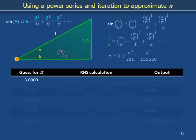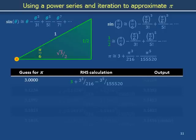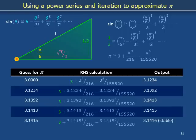We will approximate pi through iteration. We know that pi is somewhere around 3. We can put this value into the right-hand side of the equation to get 3 plus 3 cubed over 216 minus 3 to the 5th over 155,520. Using a calculator or long-hand arithmetic, we get 3.1234. Then 3.1234 can be substituted into the right-hand side to obtain 3.1392. Continuing three more times, the successive approximations to pi start settling down until they reach the stable value 3.1416, which is consistent to four decimal places with our mnemonic 3.14159.